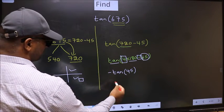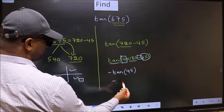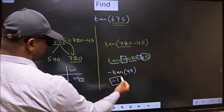So, we should put negative. So, negative tan 45 is 1. This is our answer.